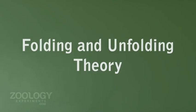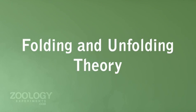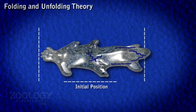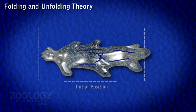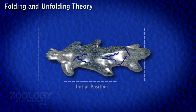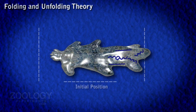Locomotion: Folding and Unfolding Theory. The folding and unfolding of protein chains causes contraction and relaxation of protein molecules. The sol state of protoplasm is due to the folding of protein molecules, and the gel state is due to the unfolding of protein molecules.